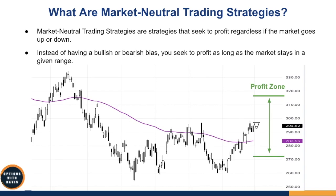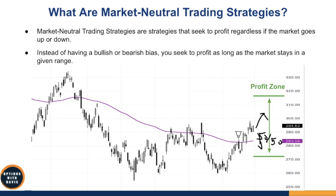If you were to just choose a traditional way of trading — let's say you think it's going to go up and you buy it — chances are it's going to be a 50-50 kind of probability that you'll make money. Same thing if you trade the market short without options, it's going to be 50-50. But if you use options with market-neutral trading strategies, you definitely have a more than 50% probability of profit that the market is going to stay within this given range.